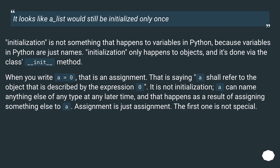"It looks like `a_list` would still be initialized only once." Initialization is not something that happens to variables in Python, because variables in Python are just names. Initialization only happens to objects, and it's done via the `__init__` method. When you write `i = 0`, that is an assignment — it is saying `i` shall refer to the object described by the expression `0`. It is not initialization. A name can refer to anything else of any type at any later time, and that happens as a result of assigning something else to it. Assignment is just assignment. The first one is not special.